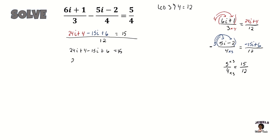Now let's collect our like terms together. We have 24i minus 15i — remember you always move your term with the sign that's in front of it — plus 4 plus 6, all equal to 15. So 24i minus 15i equals 9i, and 4 plus 6 equals 10. For those who are more advanced with algebra, you probably won't need all of these steps, but I'm including them for anyone who may be struggling, so they can follow me step by step and understand where each answer comes from.